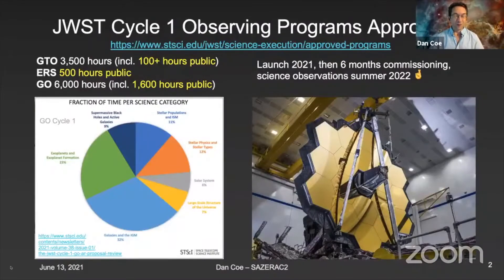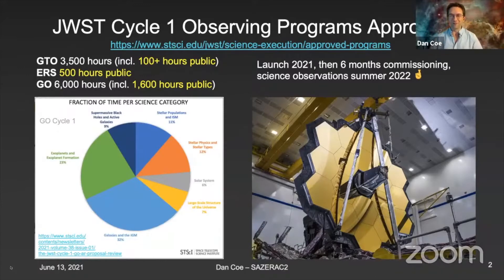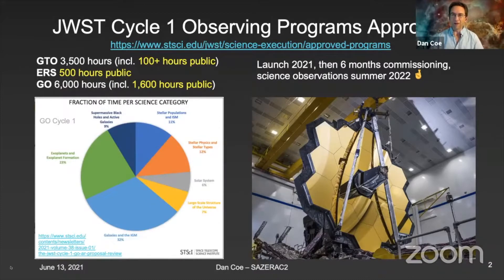As we've been talking about, it's been great to hear about all these great JWST programs, and congratulations to everybody who's gotten time. 10,000 hours of observations are being planned for Cycle 1. Over 2,000 of those hours will be public immediately, and we can hope to start seeing data around this time next year, assuming all goes well.